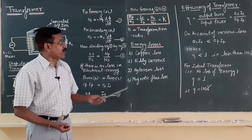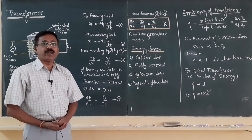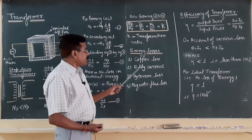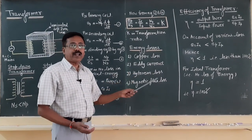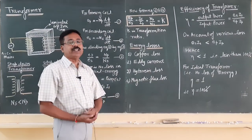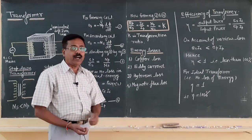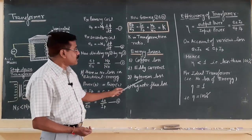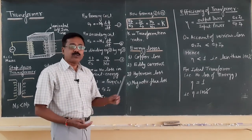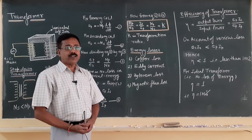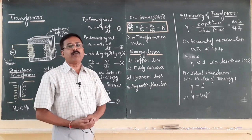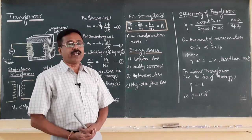Coming to the types of losses during energy transfer in a practical transformer, there are several losses. Copper loss is due to the resistance of the coil. Eddy current loss is due to the continuous change in the magnetic flux linked with the soft iron core. Hysteresis loss occurs because the soft iron is continuously magnetized and demagnetized, so some electrical energy is lost. Magnetic flux loss is due to improper coupling of the primary and secondary coil.